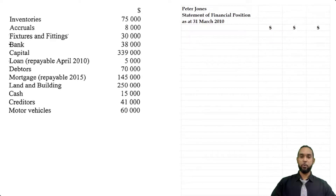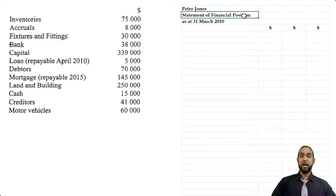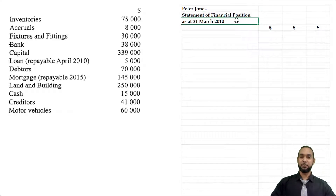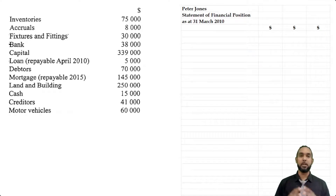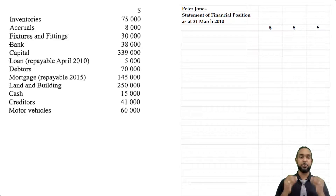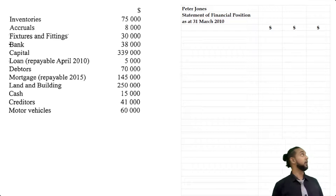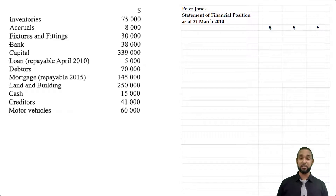Let's always remember to head up our statements properly: the name of the entity (Peter Jones), the correct term — statement of financial position — and the date, as at 31st March 2010. Order of permanence means long-lasting assets first. If you need to check out my playlist on balance sheets and how to prepare them, the link is in the description below.